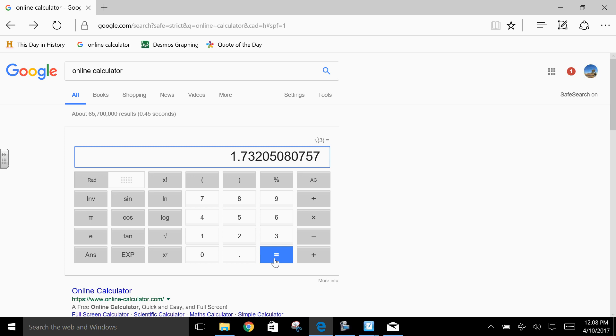Notice how none of the numbers repeat one after the other. So square root of 3 would be an irrational number.